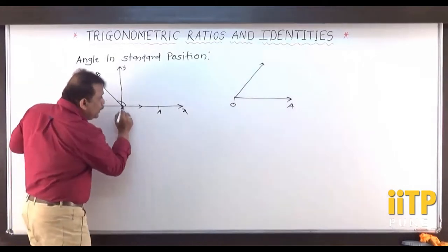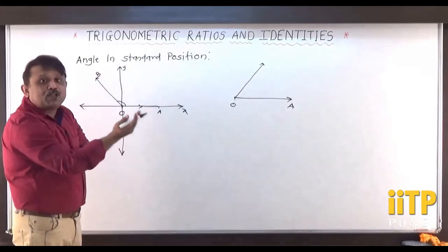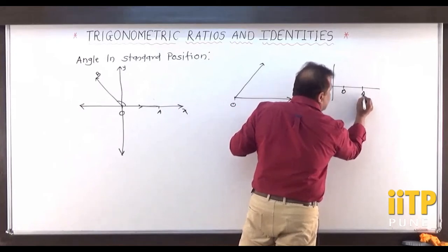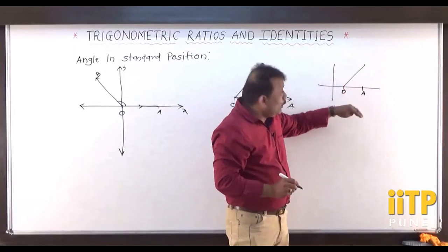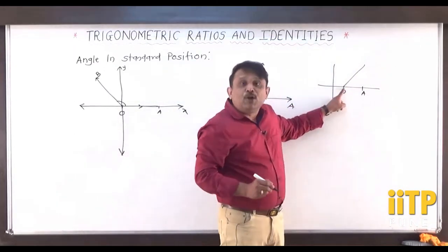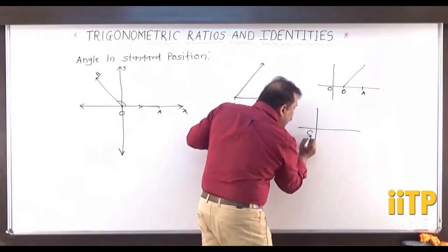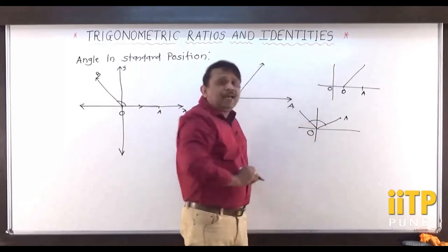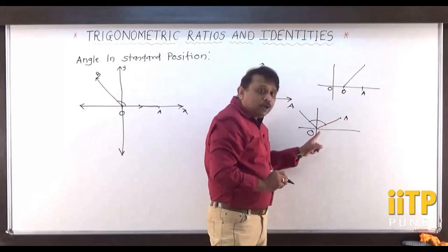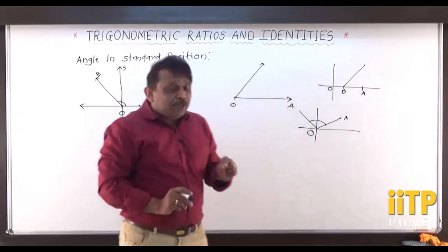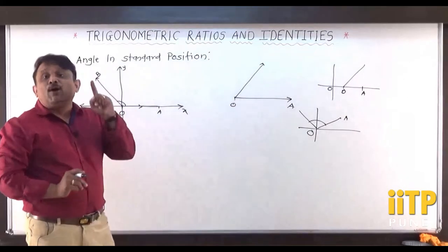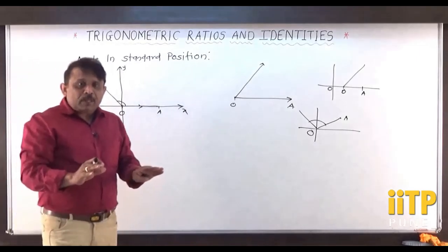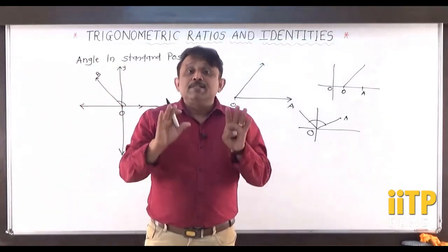If the vertex is not at the origin, the angle is not in standard position. Similarly, if the origin is taken but the initial ray OA is not along the positive x-axis, the angle is not in standard position. Both conditions must hold: vertex at the origin and initial ray along the positive x-axis. Throughout trigonometry, we will consider angles of the trigonometric ratios in standard positions.